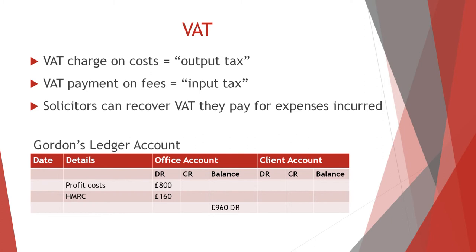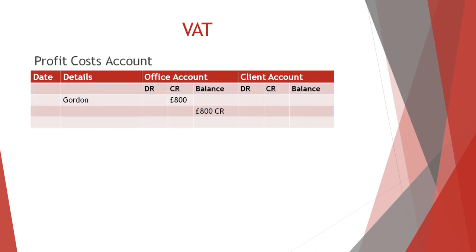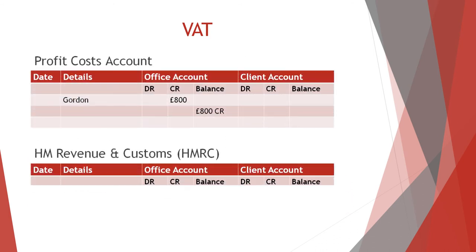First, you render the profit costs in the normal way. You debit the client's ledger account to the sum of the profit costs, and the corresponding credit entry goes in the profit cost account. The VAT is a debit entry in the client's ledger account, and the corresponding credit entry goes in the HM Revenue and Customs ledger account.